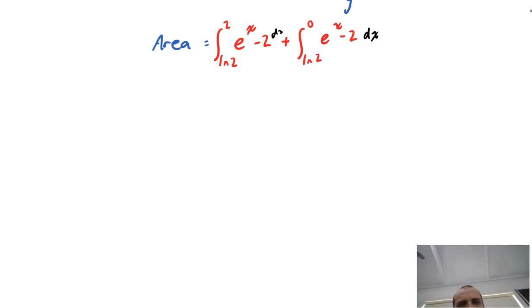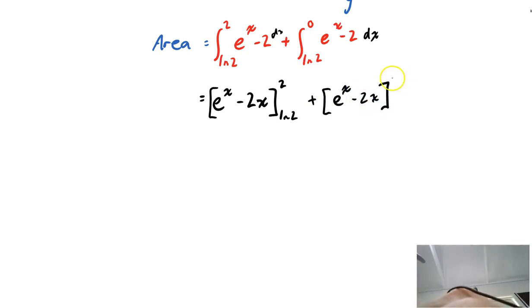So I'm going to do it here. You could pause it and do it yourself if you want to try it. So I'm finding the integral of this, which is e to the x minus 2x, square brackets between 2 and ln2. And I'm adding in the integral of that, e to the x minus 2x, between 0 and ln2.